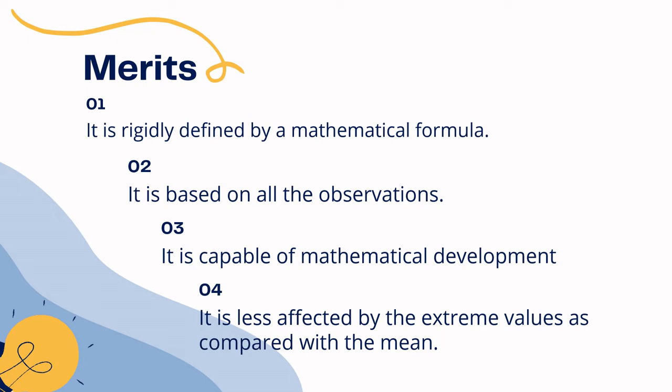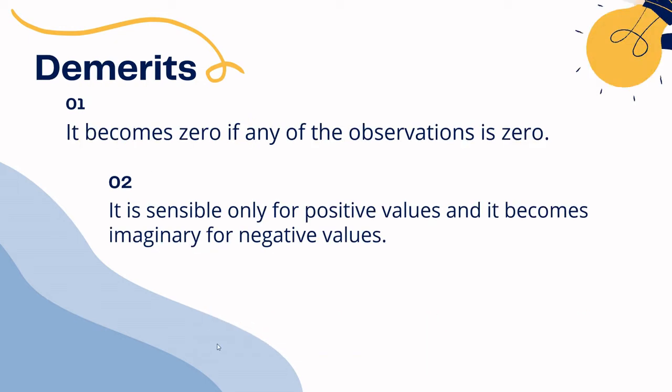Now, demerits. Number one: geometric mean becomes zero if any observation is zero. By definition, geometric mean of n positive values x1, x2, ... xn is the nth root of their product. So you multiply all observations and take the nth root.